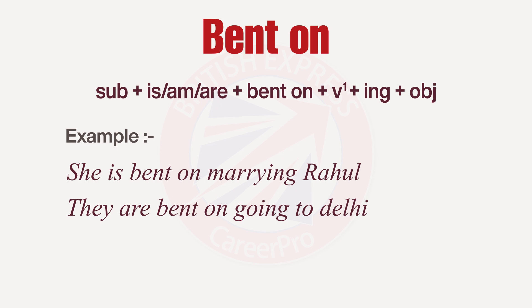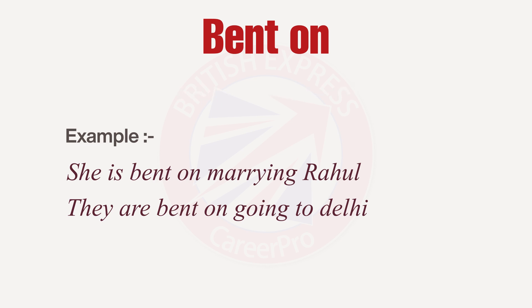Second example: they have decided to do something, so we say 'They are bent on going to Delhi.' Like they have made a plan to go to Delhi — it means they had two or three places in mind but now they have finally decided on going to Delhi.